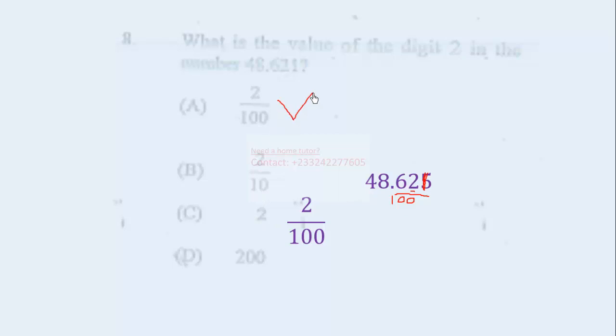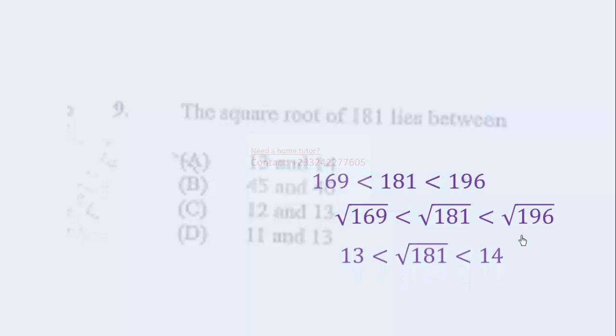Question 9. The square root of 181 lies between... We look for 2 square numbers that 181 is closest to. We know that 169 is the closest square number to 181 that is less than 181, and the closest square number to 181 that is greater than it is 196. Let's take square roots of all the numbers. Square root of 169 is less than square root of 181, which is less than square root of 196. That gives us 13 is less than square root of 181, which is less than 14. So it is between 13 and 14.